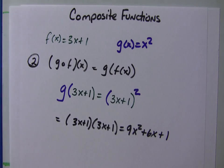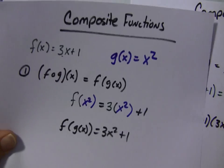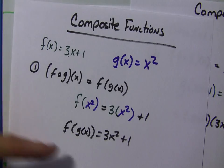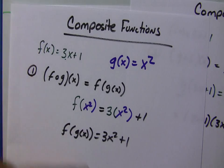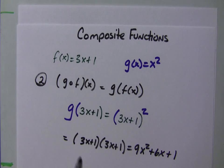And remember the first one we did, where we had f of g of x here. We got an entirely different answer: 3x squared plus 1. g of f of x was 3x squared plus 1 quantity squared, or 9x squared plus 6x plus 1.